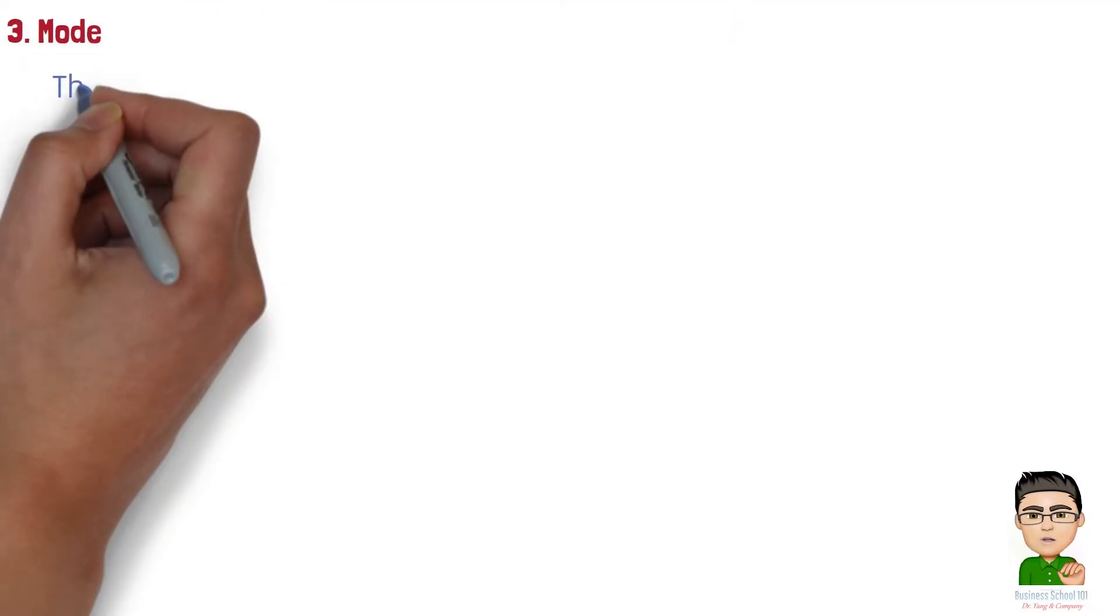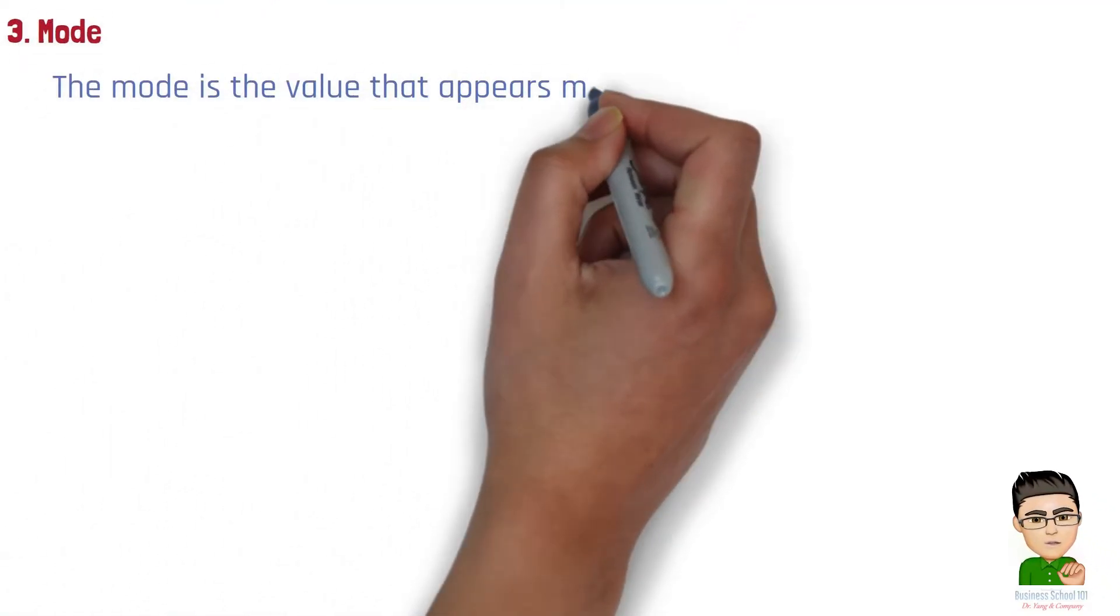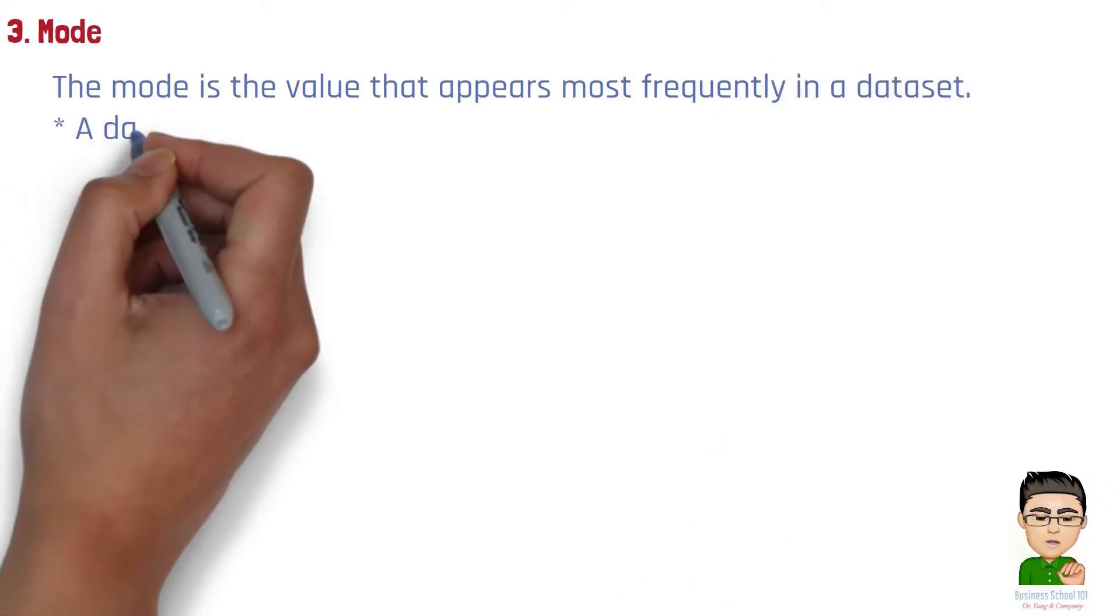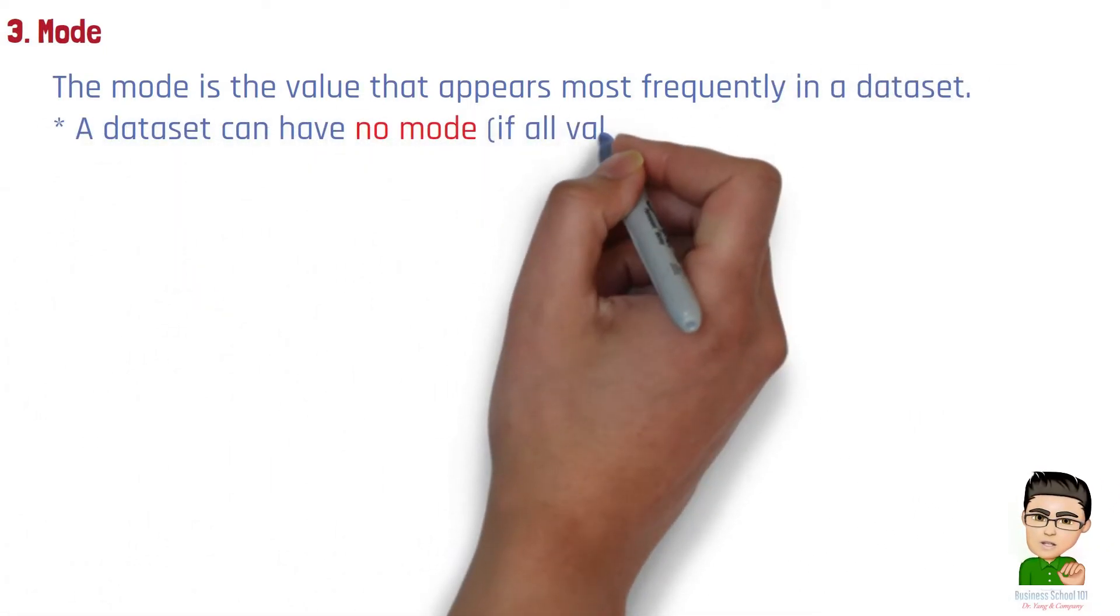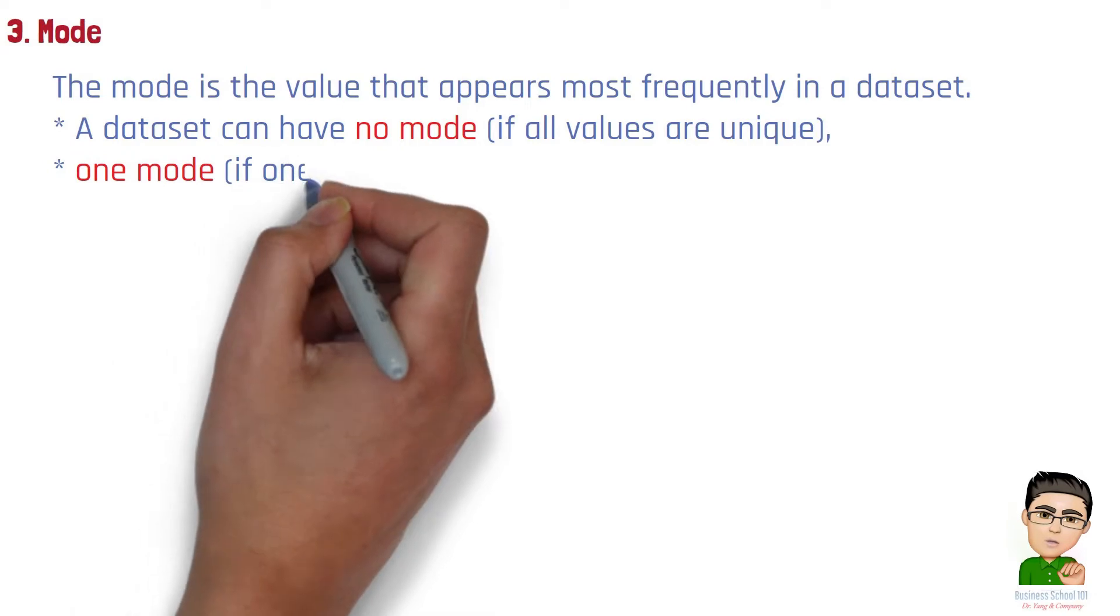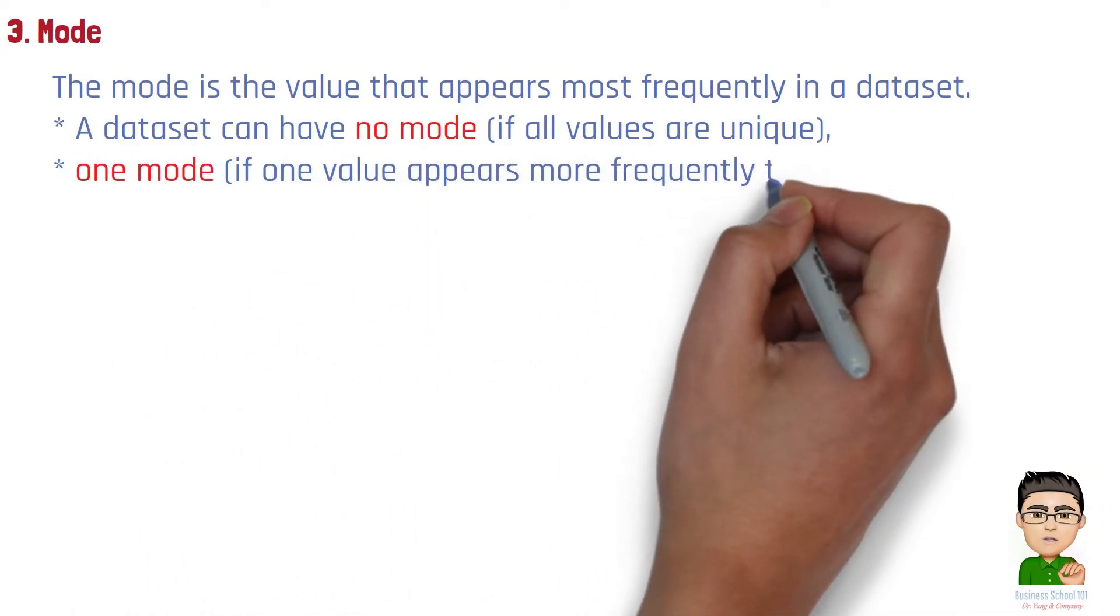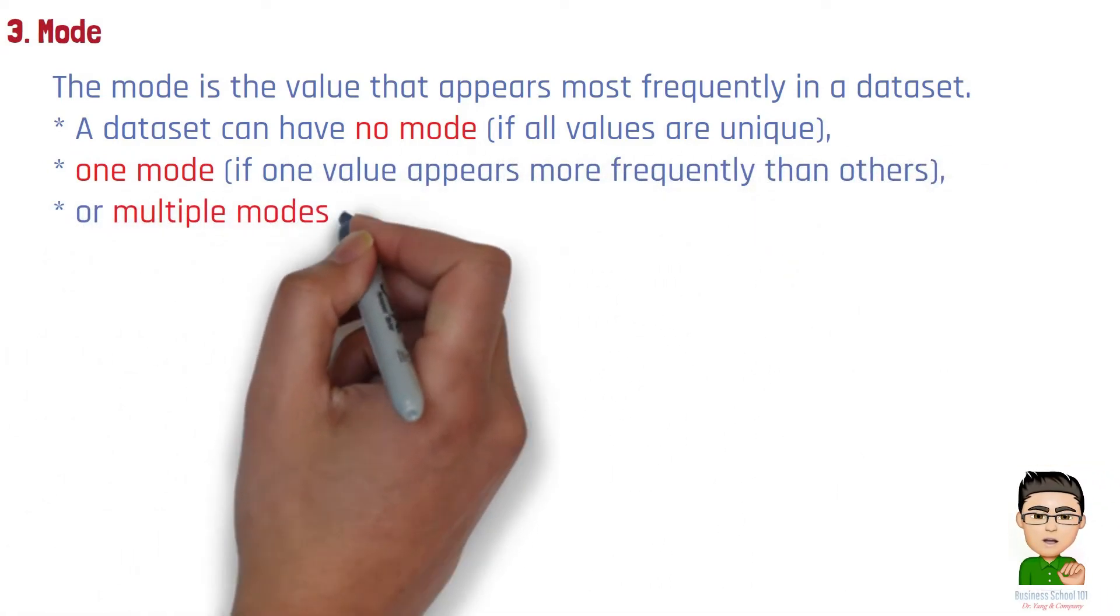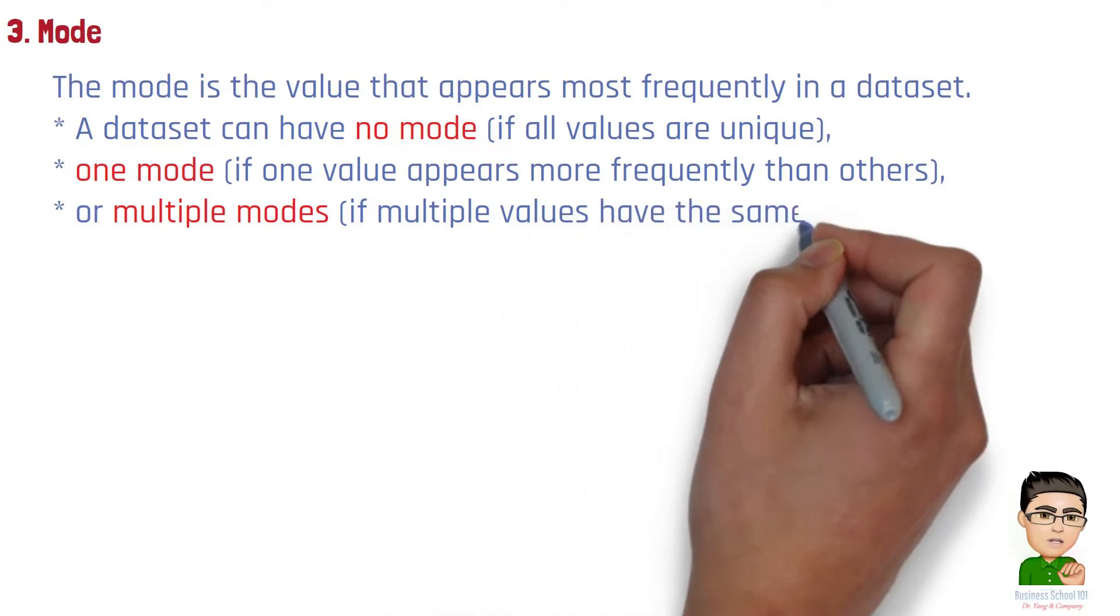Section 3: Mode. The mode is the value that appears most frequently in a dataset. A dataset can have no mode if all values are unique, one mode if one value appears more frequently than others, or multiple modes if multiple values have the same highest frequency.